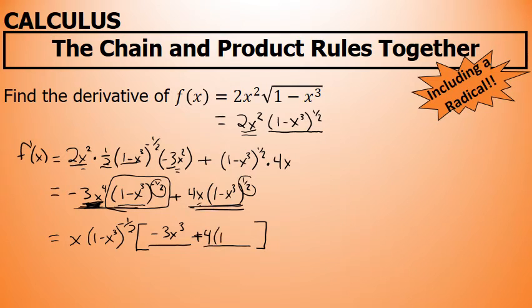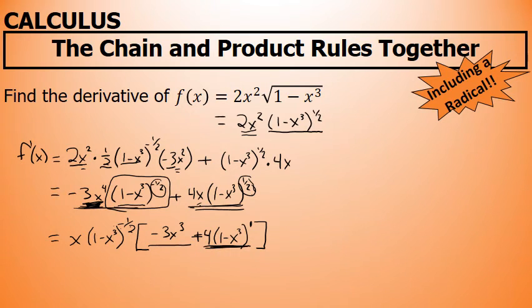What I'm left with is (1 minus x³) to the power of: I started with one-half and took away a negative one-half power by subtracting exponents. One-half minus negative one-half equals 1. So I'm left with 4 times (1 minus x³)^1 in the second term on the inside.